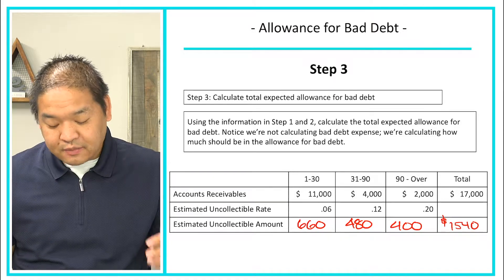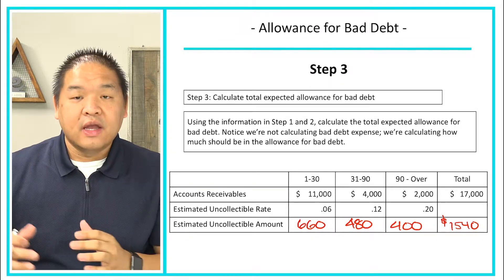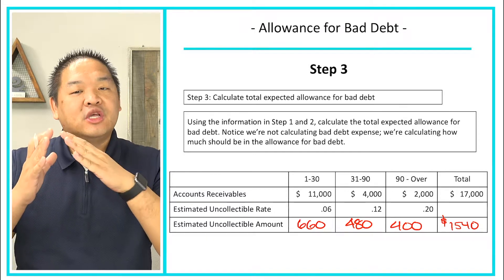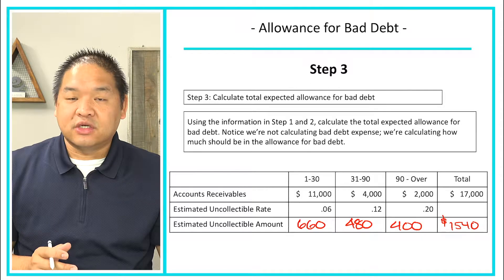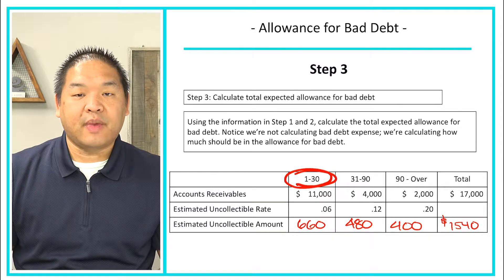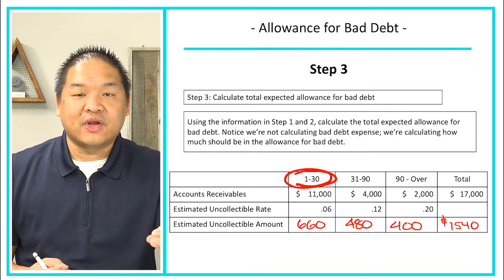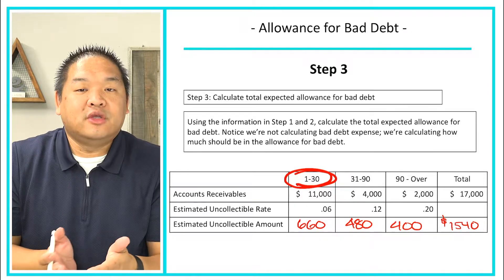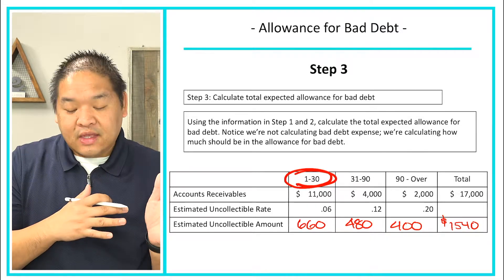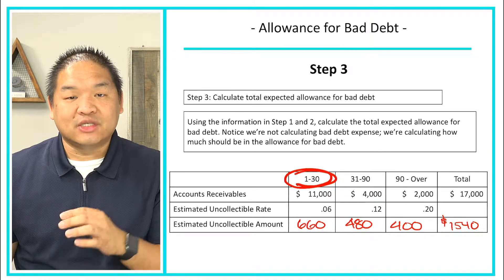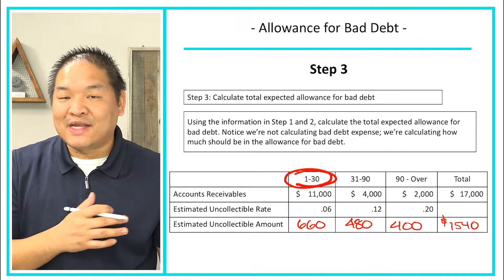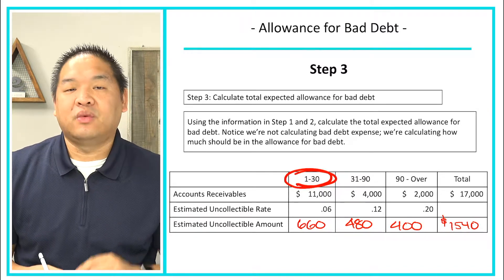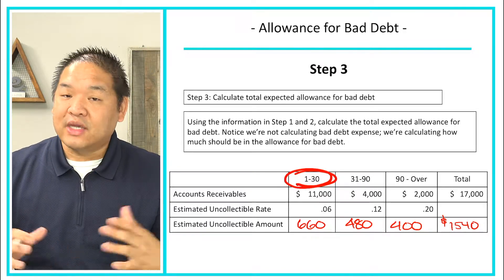Notice that as the time period goes longer, the bad debt rate goes up. What are the chances that someone over 90 days is going to pay us? Probably very small, versus someone in the one through 30 range, which may still be current — if we gave them net 30, they haven't reached their due date yet, so we'd expect most to pay. That's why we use 6% instead of 20%. If your percentages don't go from smallest to largest as you age further out, question whether you've ordered them correctly.